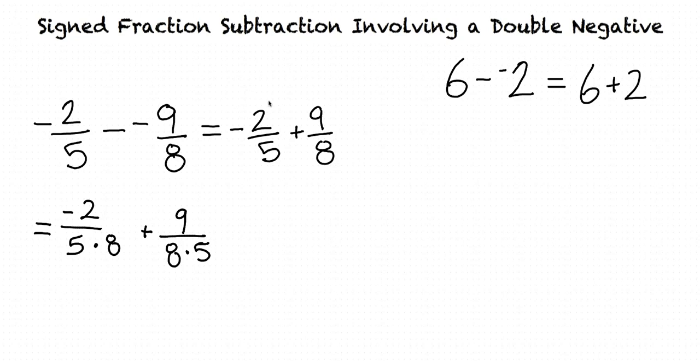So with our first fraction, since we multiply the denominator by 8, we should also multiply the numerator by 8. And with our second fraction, since we multiply the denominator by 5, we should also multiply the numerator by 5.